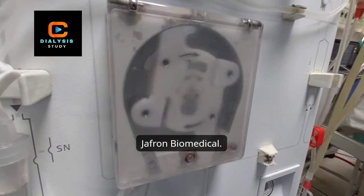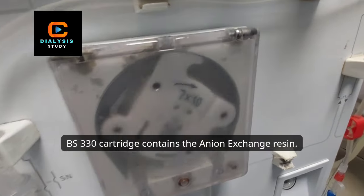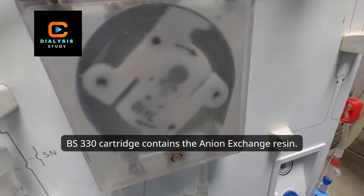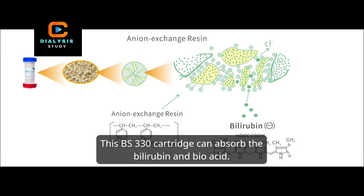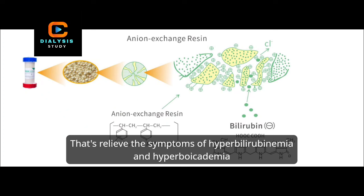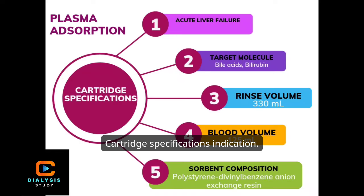The Jaffron Biomedical BS-330 cartridge contains anion exchange resin. This BS-330 cartridge can absorb bilirubin and bile acids, thus relieving the symptoms of hyperbilirubinemia and hyperbiliacidemia.